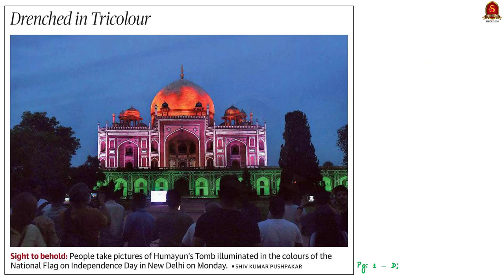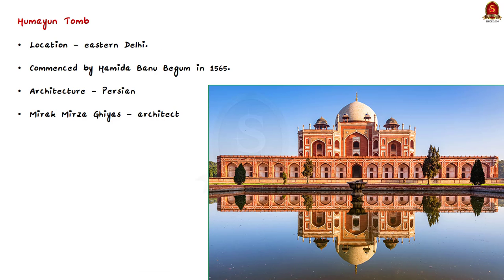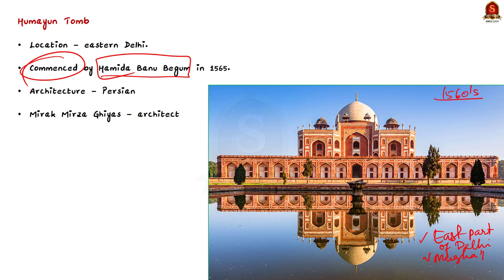Take a look at this image — it shows Humayun's Tomb, which was illuminated in the colors of the national flag on Independence Day. This made the tomb a center of attraction and many people were taking photos in front of it. Using this as an opportunity, let us revise the historic facts of Humayun's Tomb. It is located in the eastern part of Delhi and is one of the best preserved Mughal monuments. A century after its construction it inspired the Taj Mahal. It was built in the 1560s — Humayun's wife Hamida Banu Begum commissioned a mausoleum for her deceased husband in 1565, nine years after his death, under the patronage of Humayun's son, the great emperor Akbar.